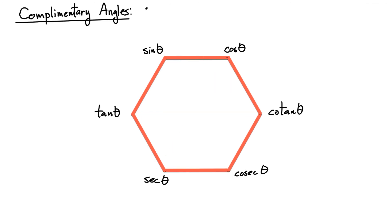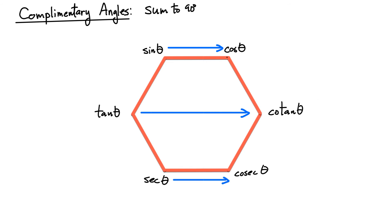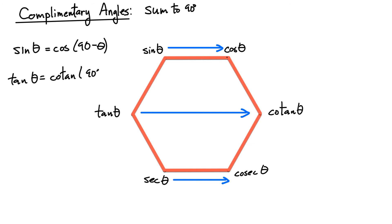The superhex can also handle complementary angles — two angles that sum to 90 degrees. By connecting vertices with horizontal lines, we get three relationships: sine of theta equals cos of 90 minus theta; tangent of any angle theta equals cotangent of 90 minus theta; and secant of the angle theta equals cosecant of 90 minus theta. Three more relationships.